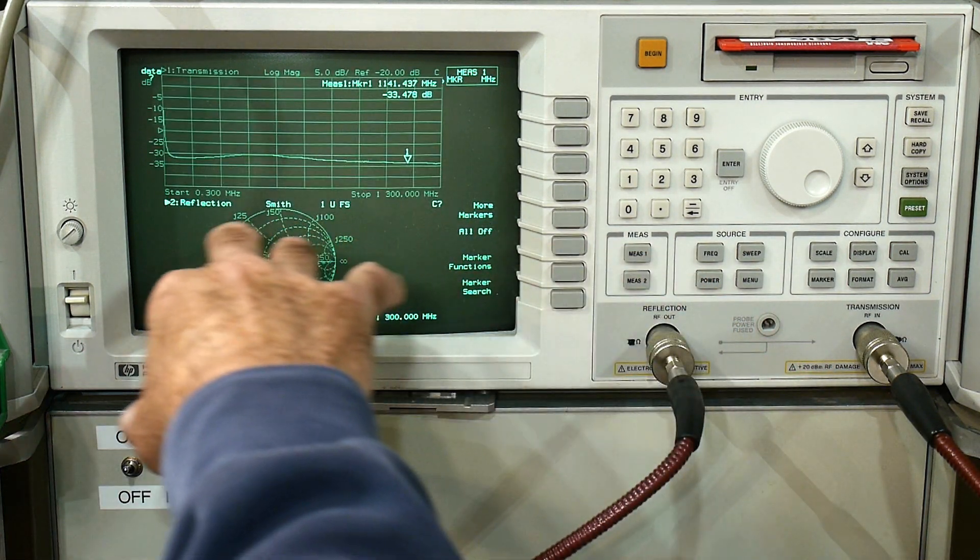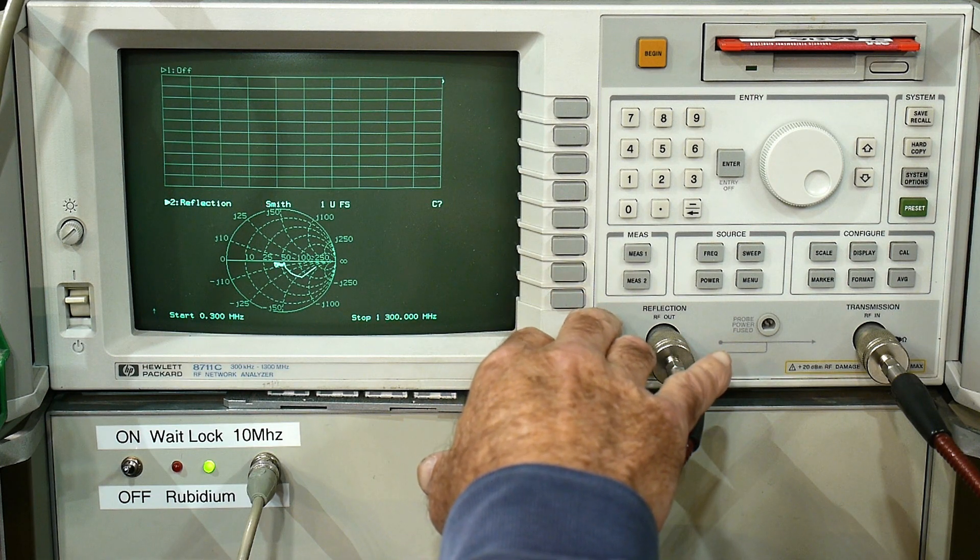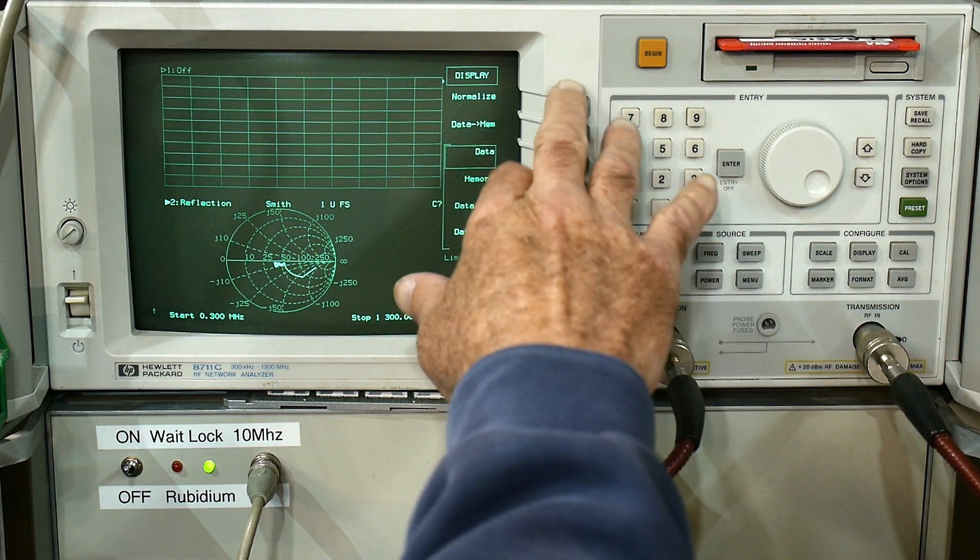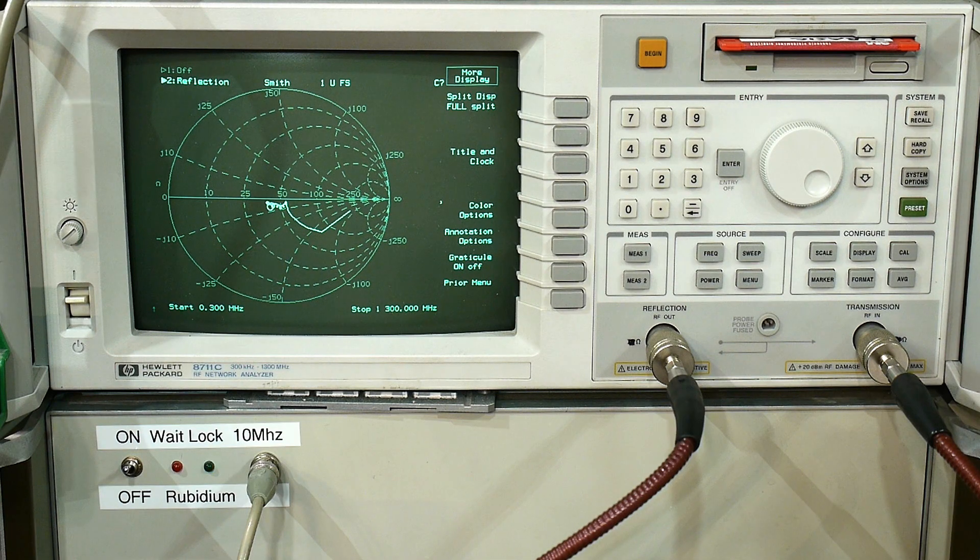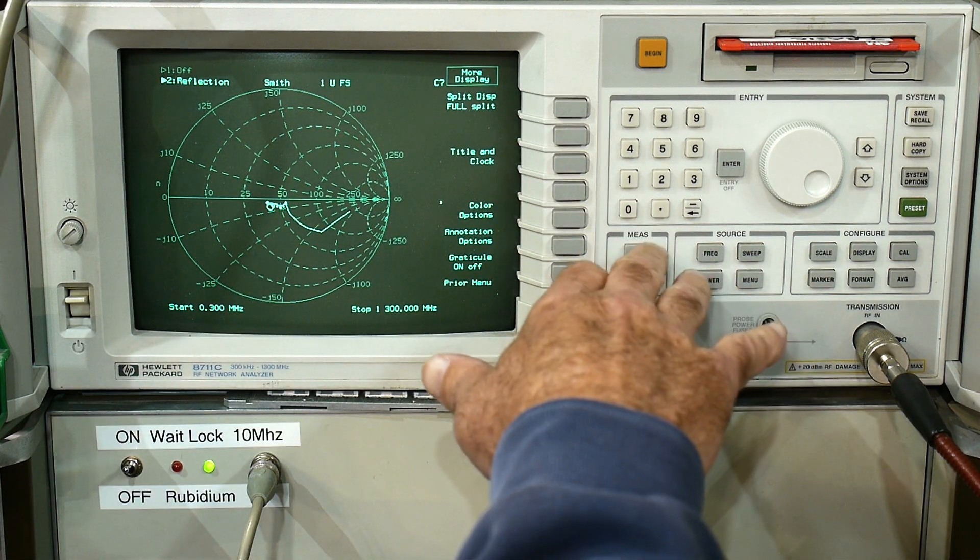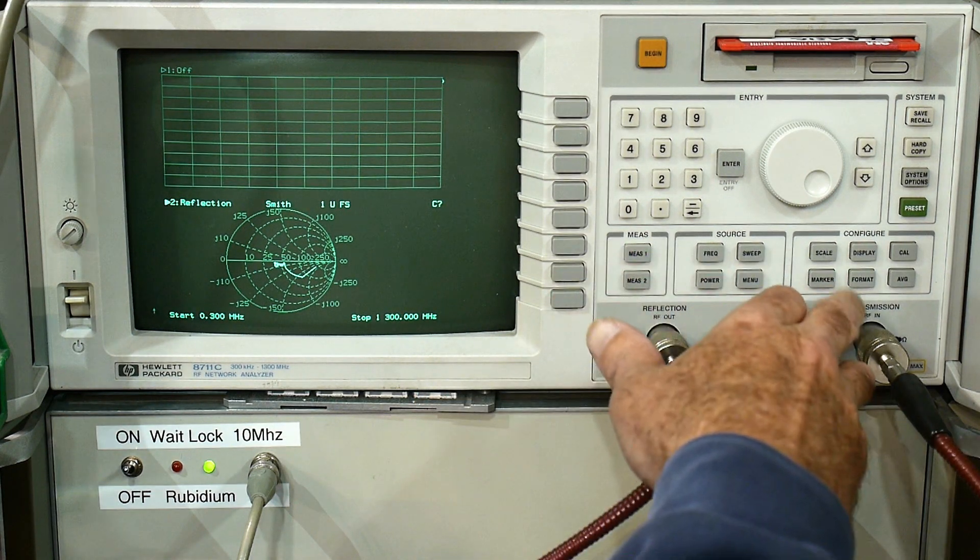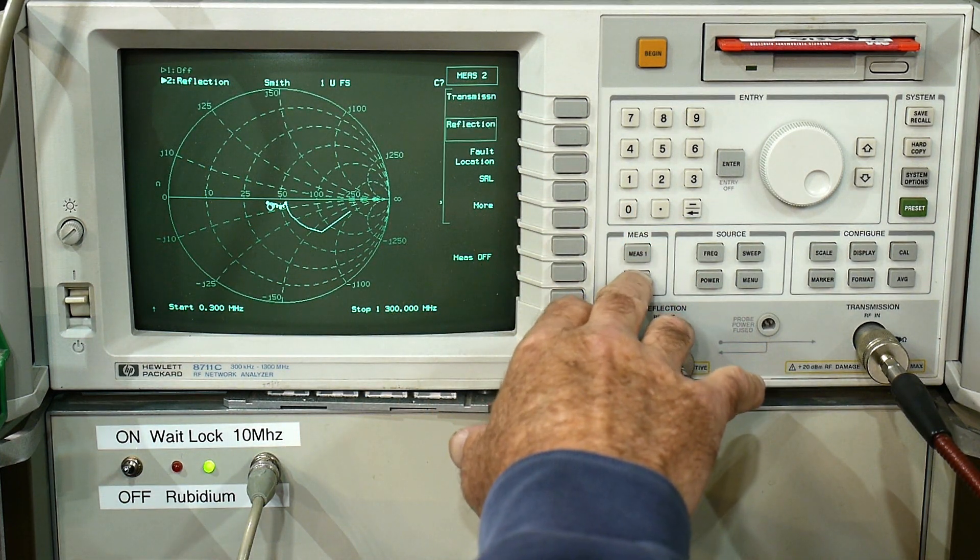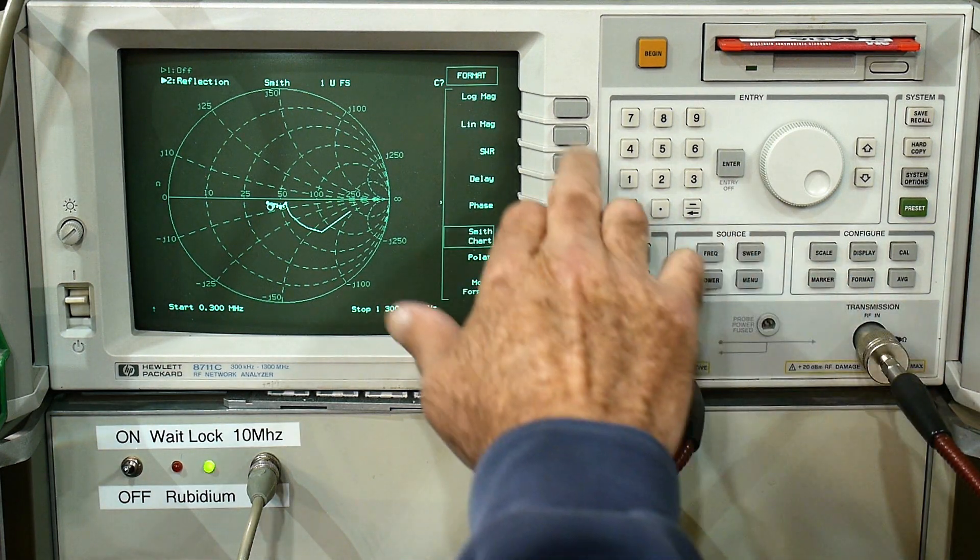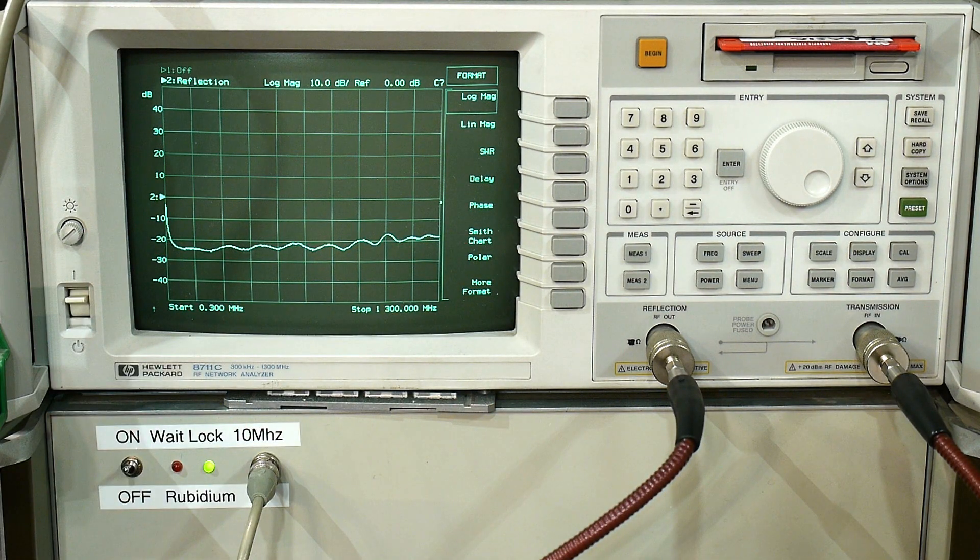We will go to reflection measurement. Let's turn off measurement one and let's go to display full screen. And let's do a calibration. Let's do measure two and we will set the format to log mag. Yeah, it's only down here at around minus 20. So not too awful, so it's certainly usable.